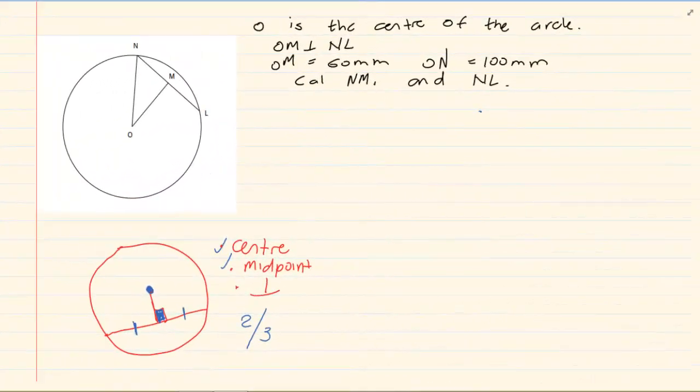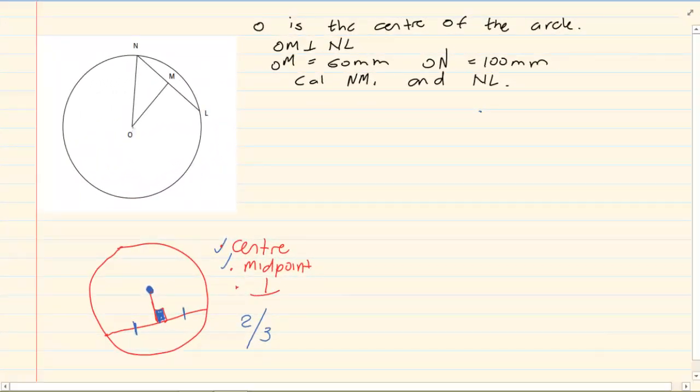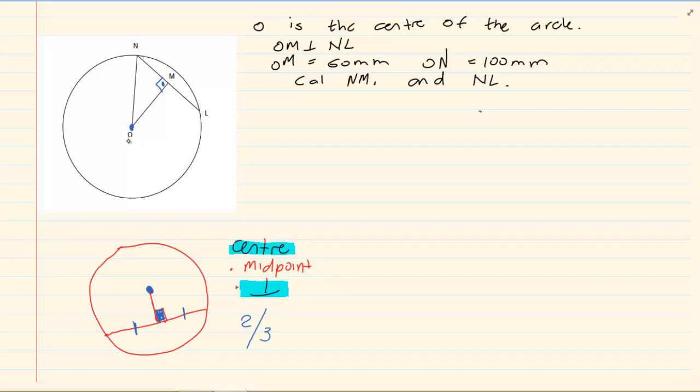Now let us look at the question. It says O is the center of the circle. Then they tell us OM is perpendicular to NL. Look at what they've done. They've given me two things: that it is perpendicular and that it's the center. So immediately, if they give me the center and perpendicular, then that means this line is cut in half, because bisect means cut in half. So I have that NM is equal to ML.